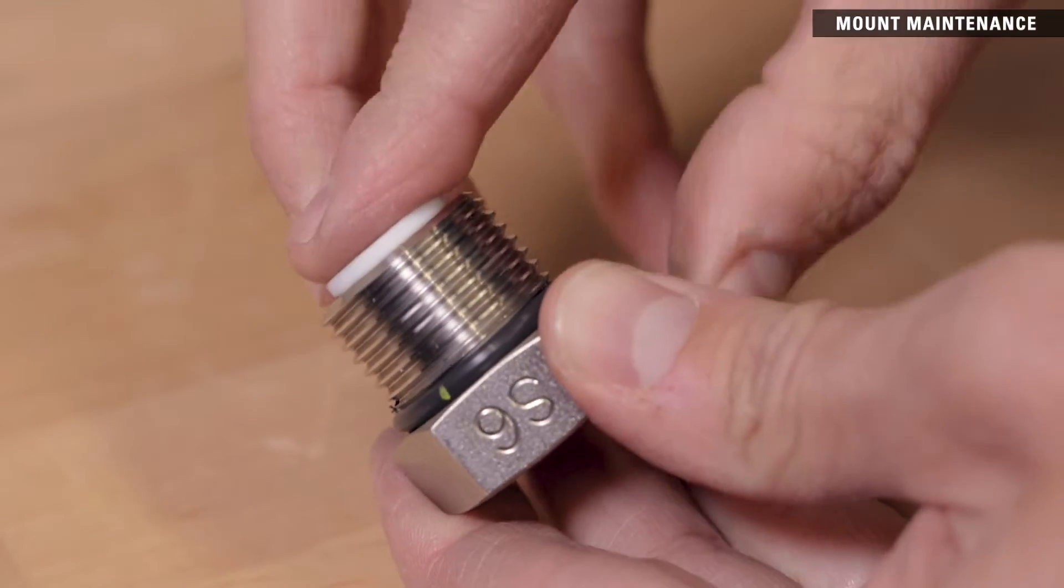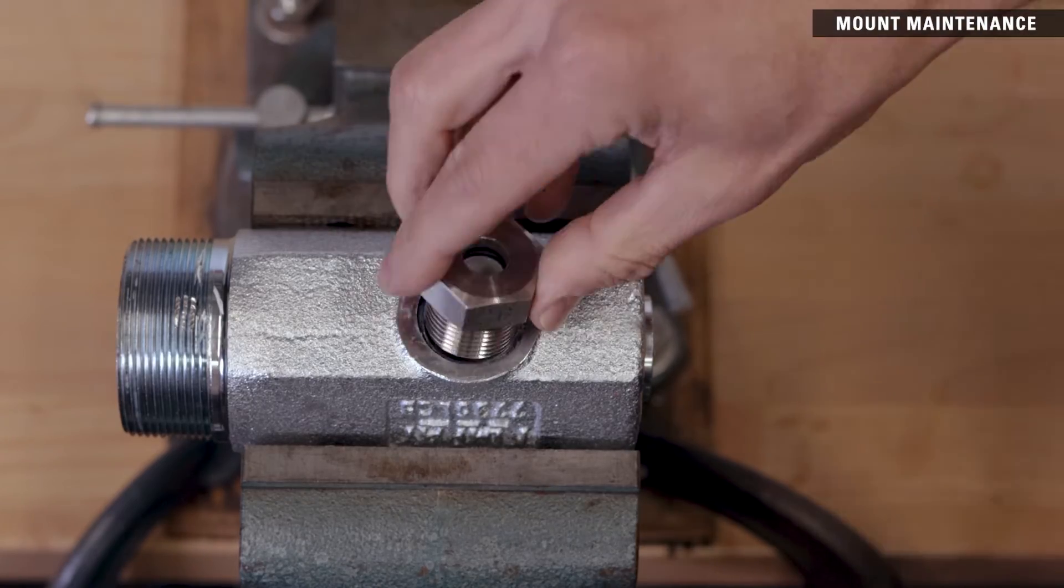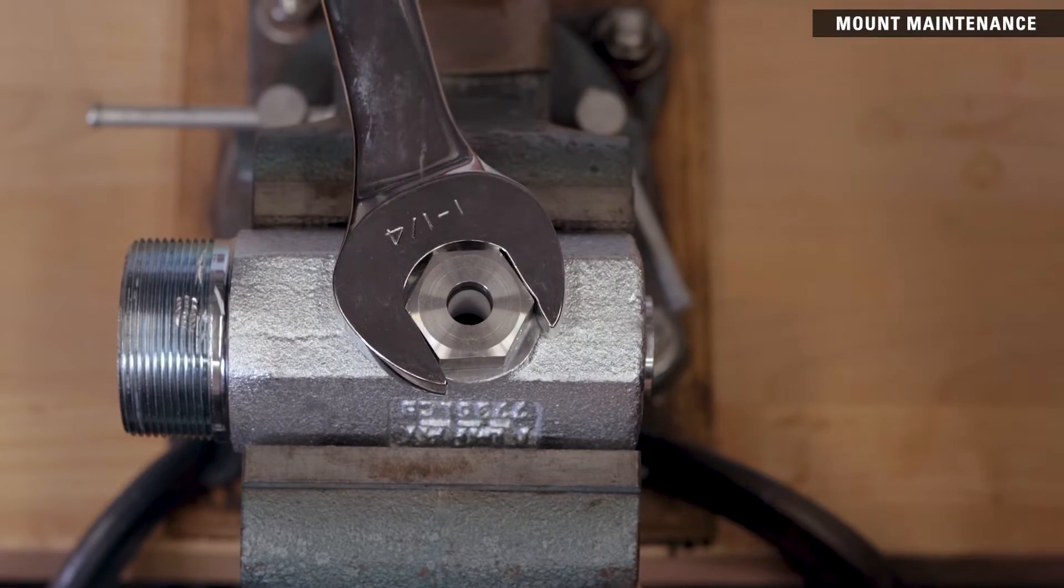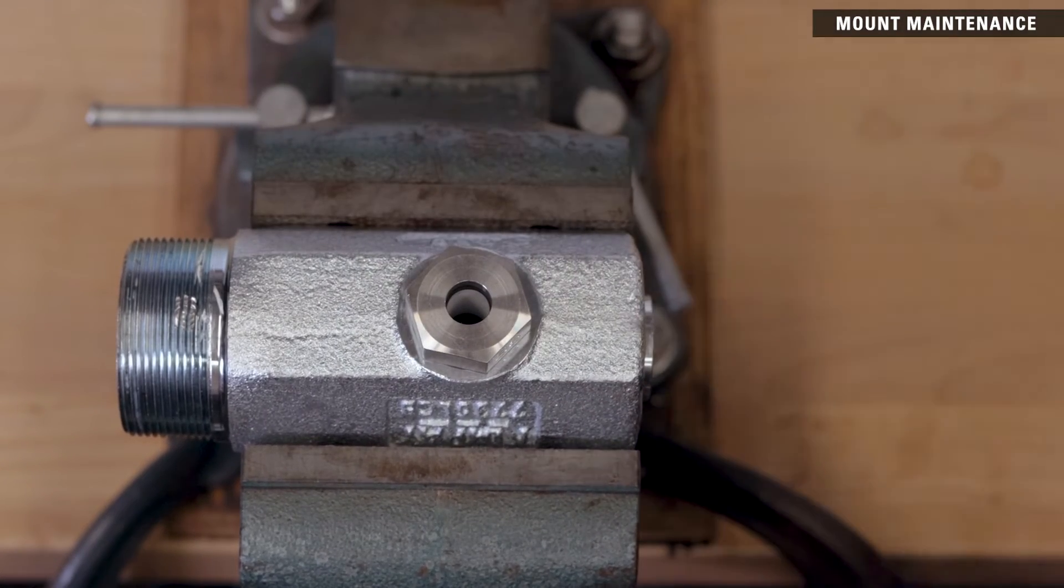Insert the flange bearing. Install one of the bearing hubs on the back side of the mount and tighten with a 1-1-4 inch wrench. Torque to between 30 and 35 foot-pounds.